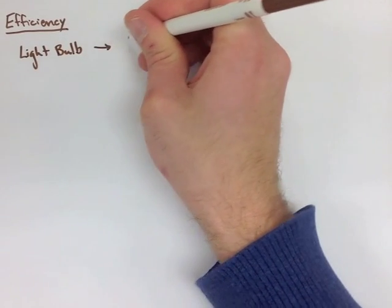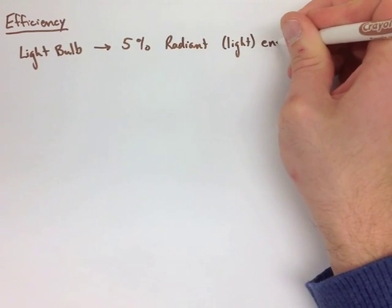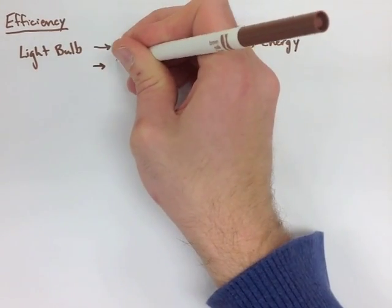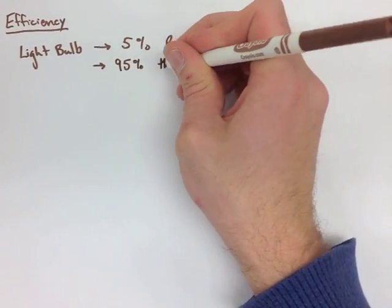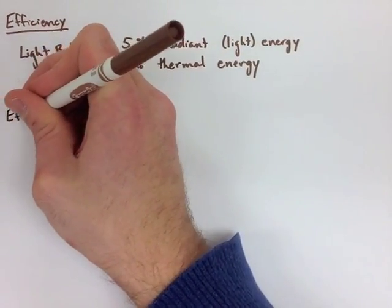Surprisingly, light bulbs are only about 5% efficient. We're talking about incandescent light bulbs. That means that 5% of the energy they have is radiant energy, or light, and the other 95% of energy going into a light bulb is actually thermal energy.